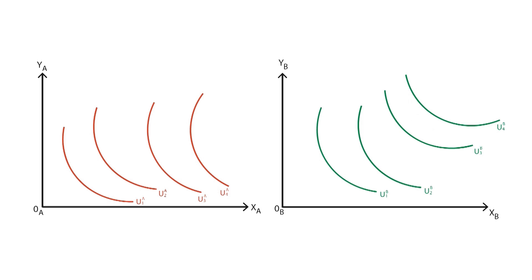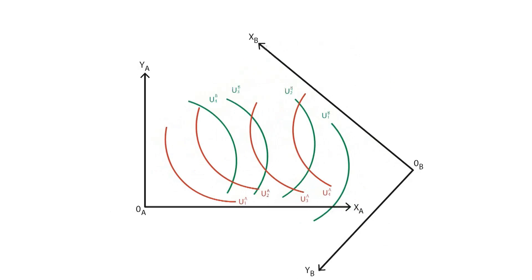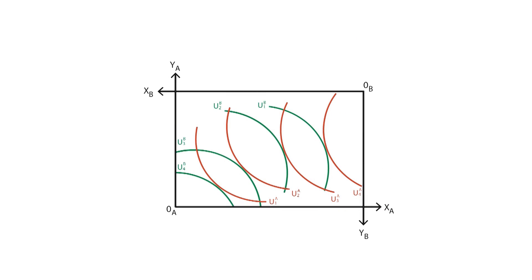When the indifference map of consumer B is rotated and put on top of the indifference map of consumer A, the Edgeworth box is formed. Indeed, it's not only easier to analyze, but also makes more sense, since the total available quantities of goods are given.